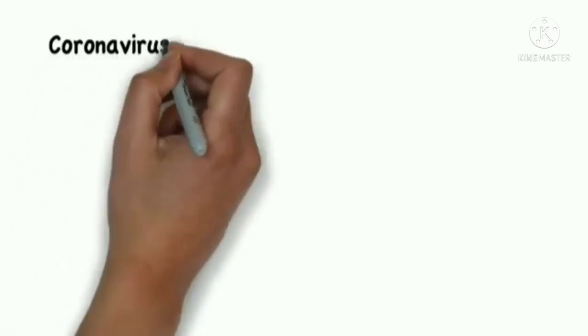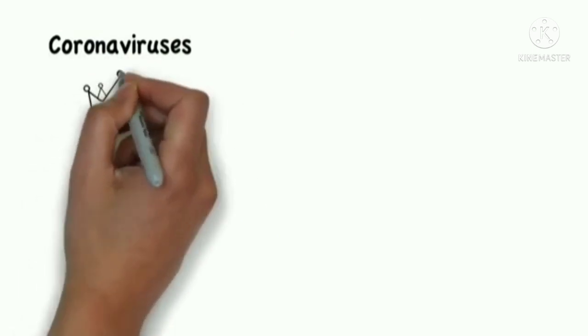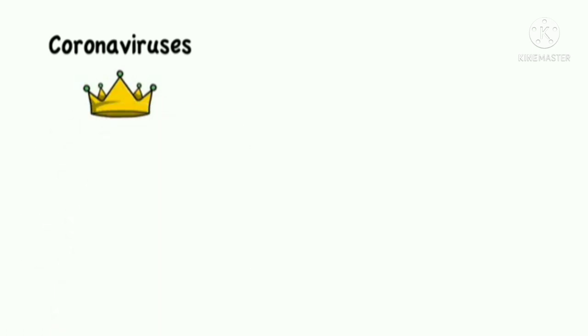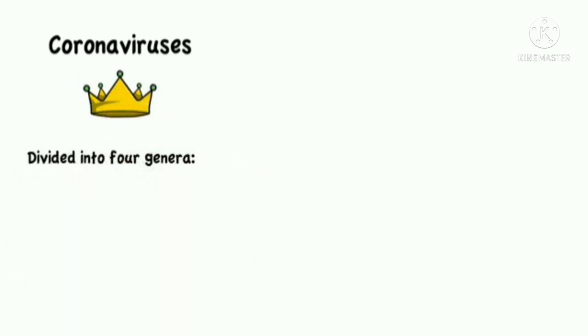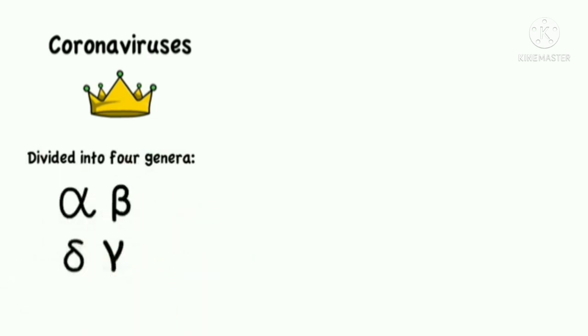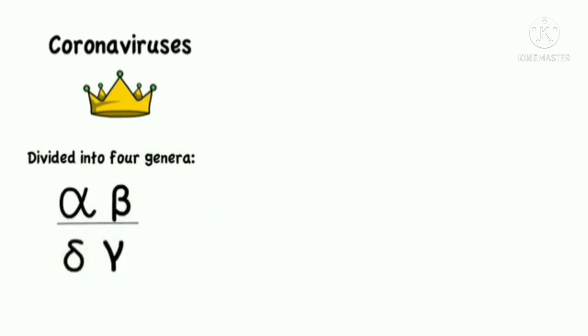The coronaviruses are a family of viruses that have this name due to their crown-like appearance in electron micrographs. They are divided into four genera: alpha, beta, gamma, and delta, but only alpha and beta coronaviruses infect mammals.